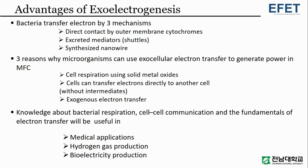In this section, the advantages of exoelectrogenesis are discussed. Bacteria transfer electrons by three mechanisms: one, direct contact by outer membrane cytochromes; two, by excreted mediators, also known as shuttles; and three, by using synthesized nanowires.